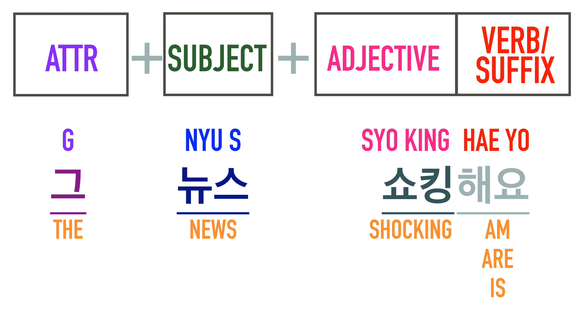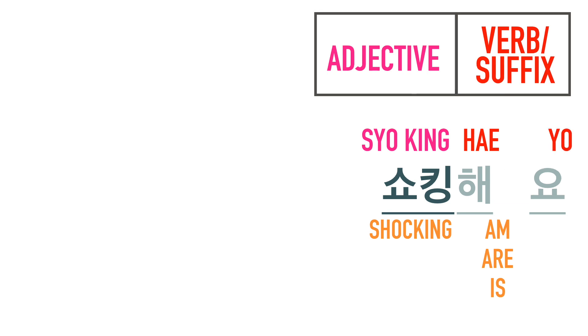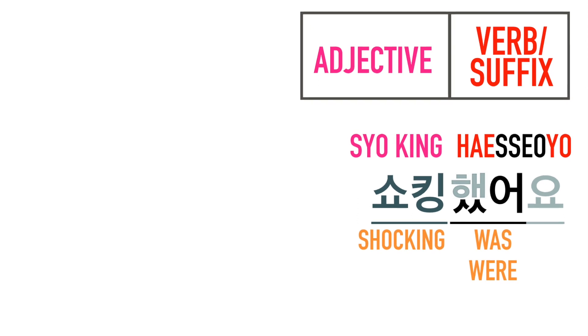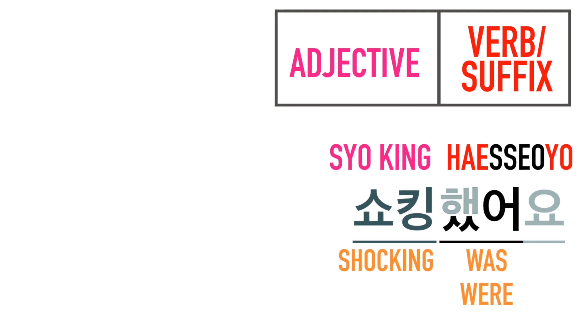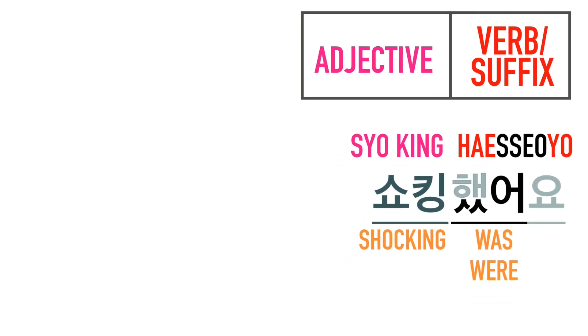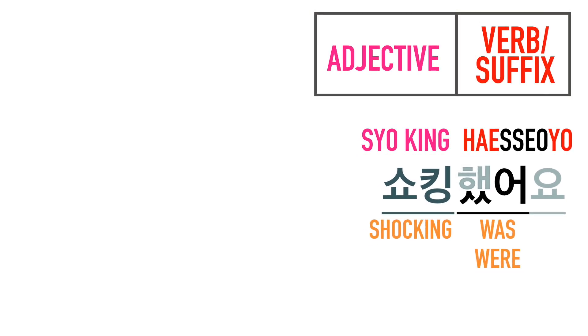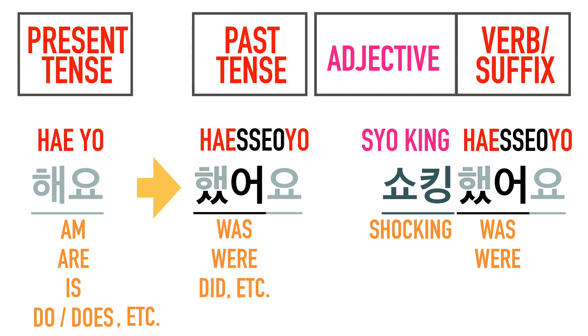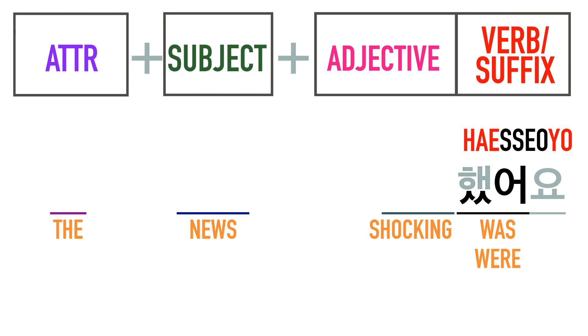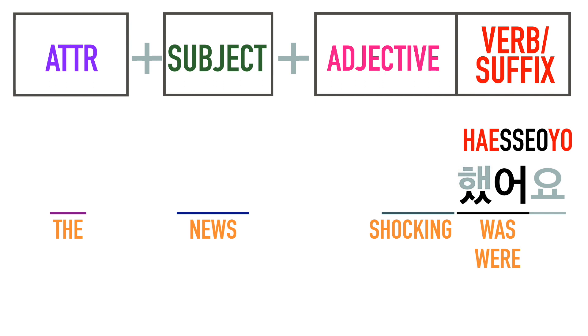It's probably more likely you'd say 'that news was shocking' in the past tense. The easiest way to make 해요 past tense is to add 써 between 해 and 요, giving you 했어요. Think of it as an infix you insert in between. This means for all expressions involving 해요 that we've learned so far, you can simply replace 해요 with 했어요 to make it past tense. So to say 'the news was shocking': 그 뉴스, shocking했어요.